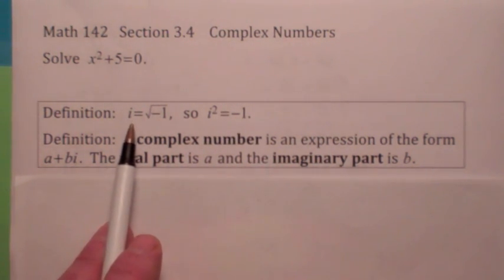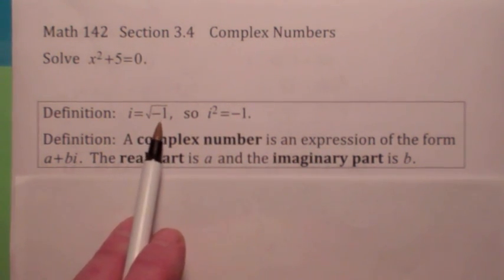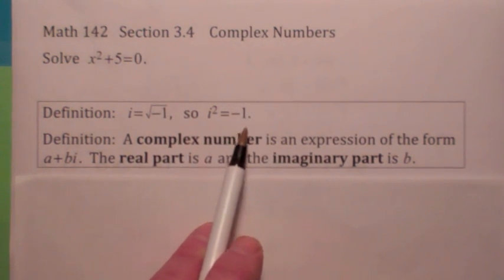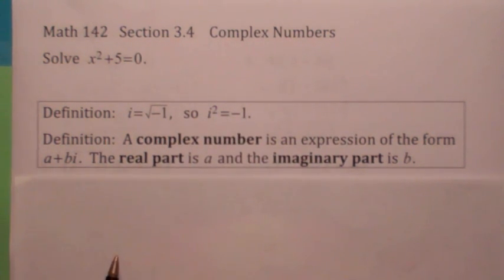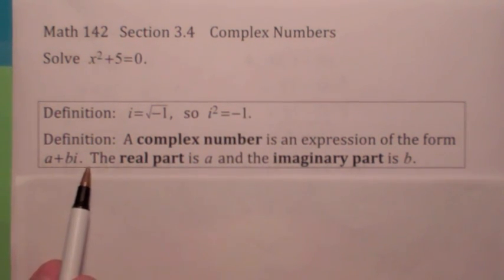All we have to do is define i to be the positive square root of negative 1. That makes i² = -1. And then we define the complex number system to be any number that can be written in the form a + bi. One thing I forgot to say in my definition here is that a and b must be real. A and b must be real numbers.